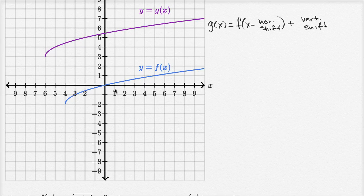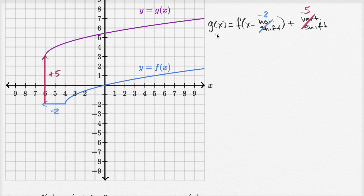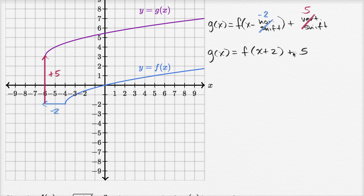To go from f to g, the horizontal shift is two to the left — or a negative two horizontal shift. The vertical shift is from y equals negative two to y equals three, so we're shifting five up — a positive five vertical shift. So g of x in terms of f of x is f of x minus negative two, which is x plus two, and then plus five.